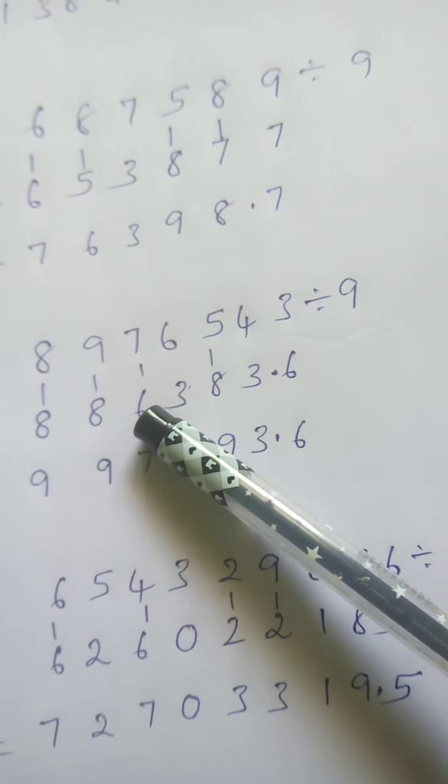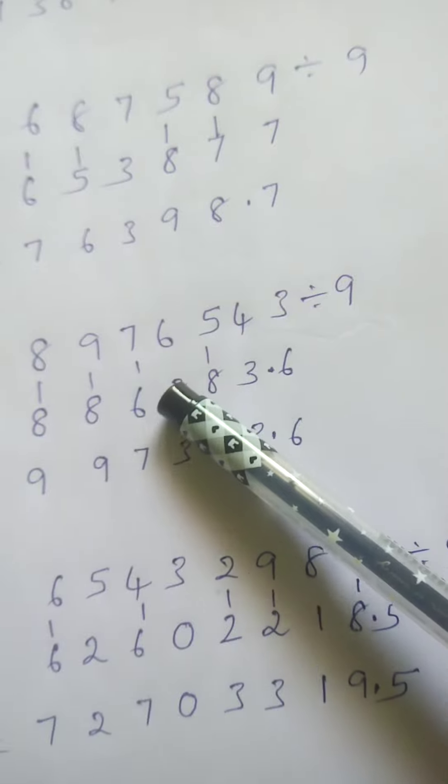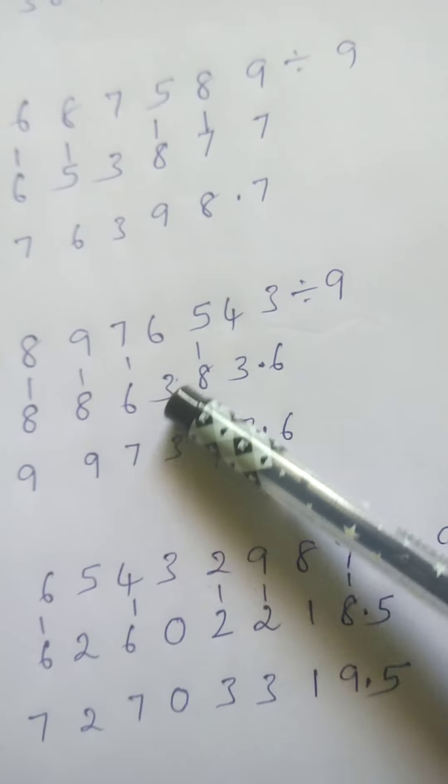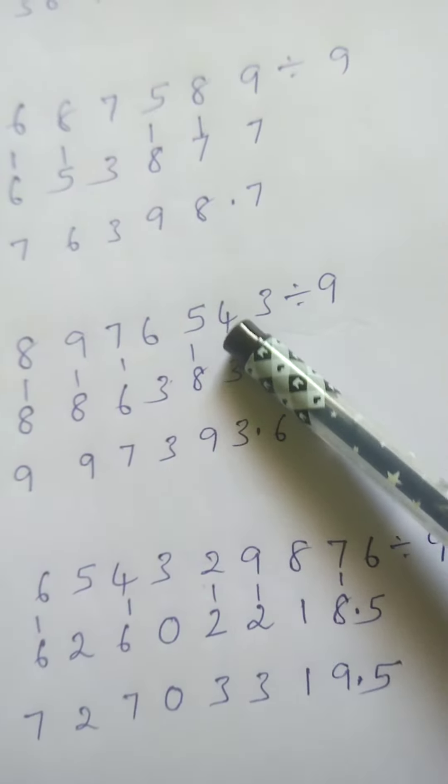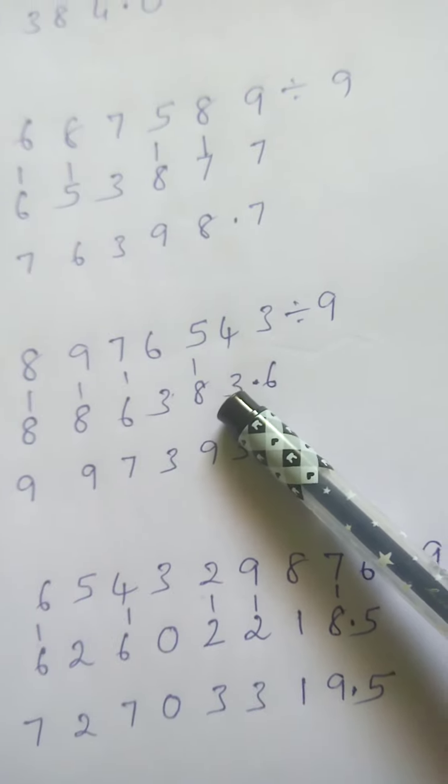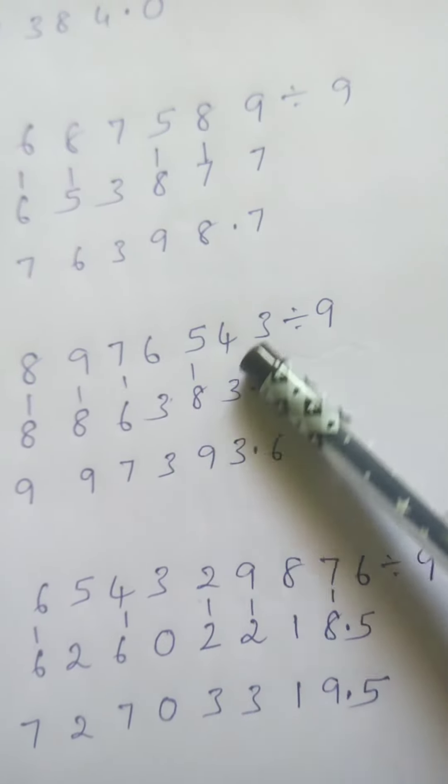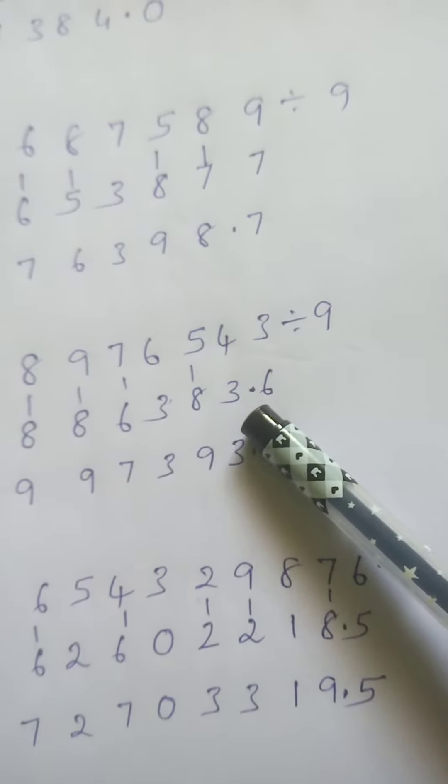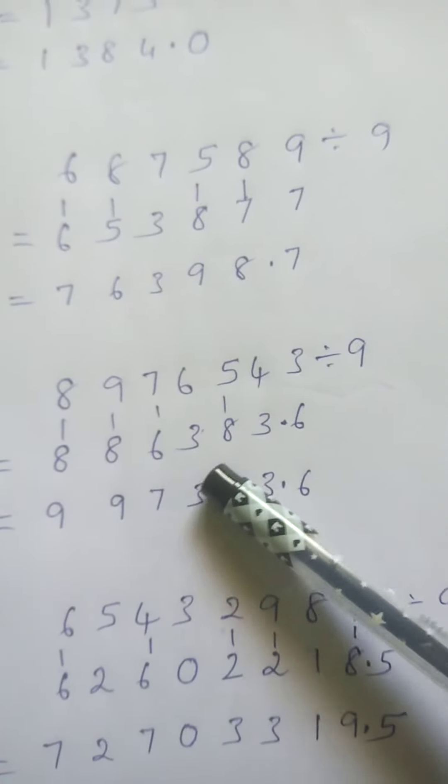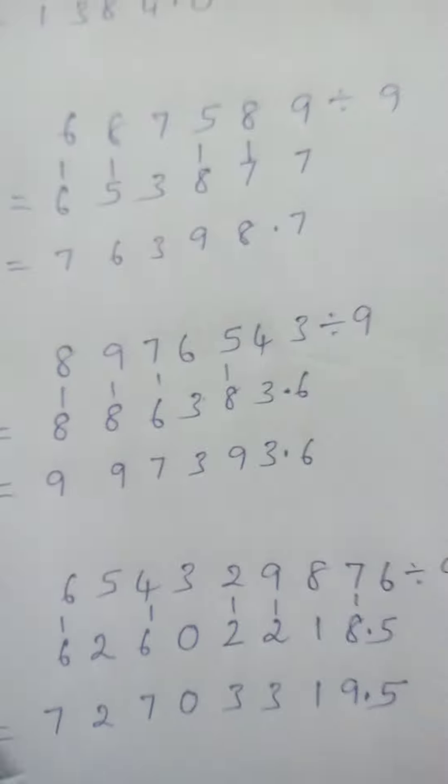Write 6 and carry 1. 6 plus 6 is 12, 12 minus 9 is 3, carry 1. 3 plus 5 is 8. 8 plus 4 is 12, 12 minus 9 is 3, carry 1. 3 plus 3 is 6, as it is. The answer is 997393.6.